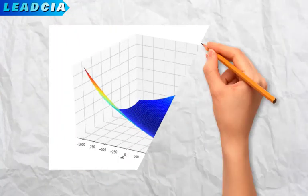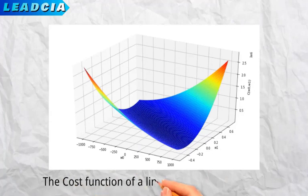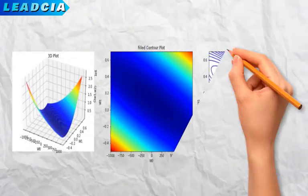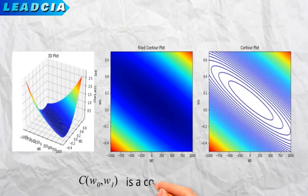We now graphically represent the cost function cw0w1. At first it seems that it is not a convex function, but if we represent it with filled contour plot, or with contour plot, we notice that it is indeed convex.